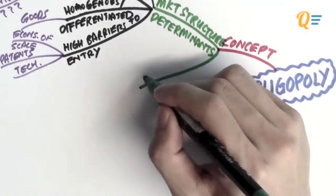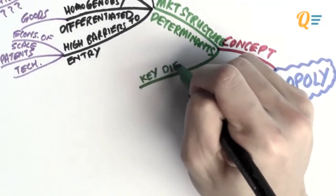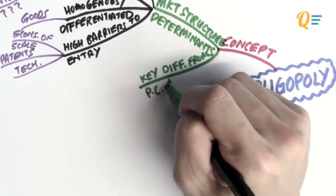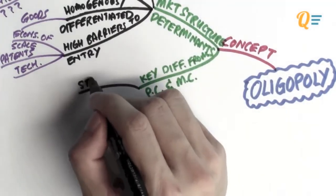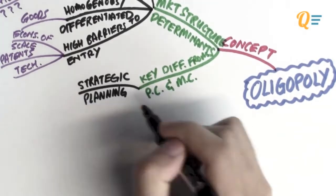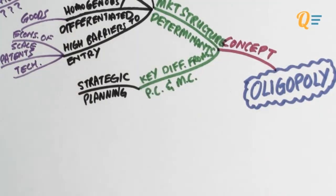But what is so special about the oligopoly market that we have to take note of? The key differentiating factor that differentiates oligopoly from perfect competition and monopolistic competition, which you will see in the later videos, is actually this thing called strategic planning.